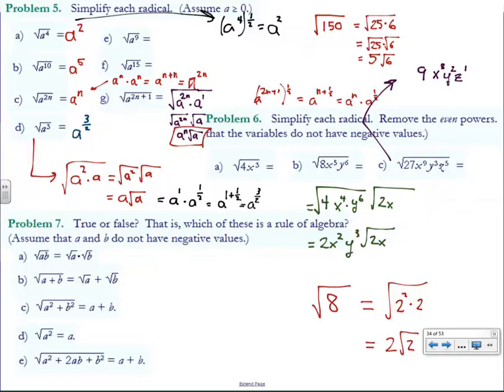Same thing can be done. Here, 27 is the product of 9 and 3. X to the 9th is the product of X to the 8th and X. Y cubed is Y squared times Y. And Z to the 5th is Z to the 4th times Z. So perfect squares, non-perfect squares. Square root of 9 is 3. Square root of X to the 8th is X to the 4th. Y, Z squared, square root of all the other stuff. Nothing to it.